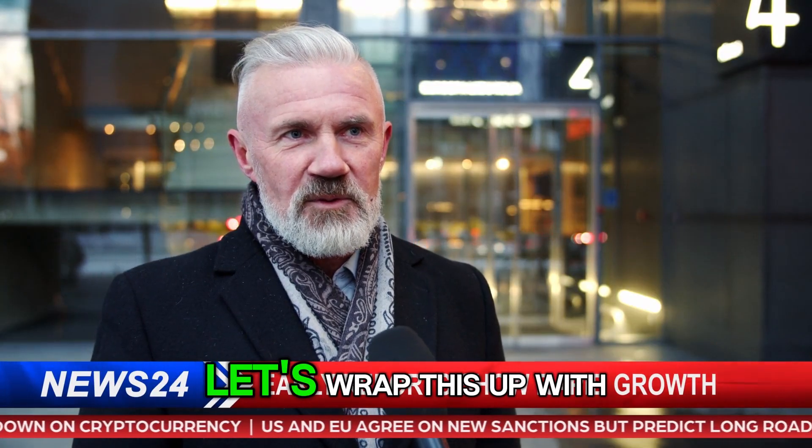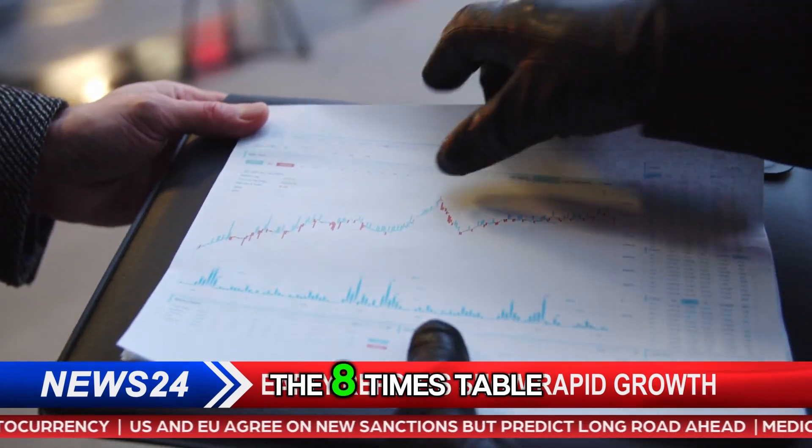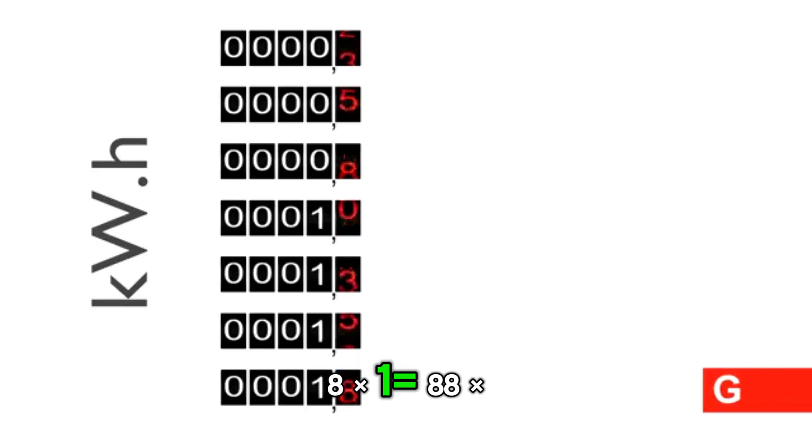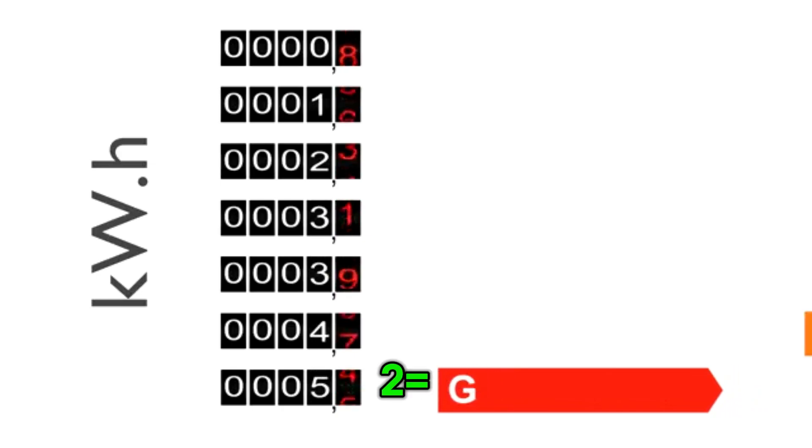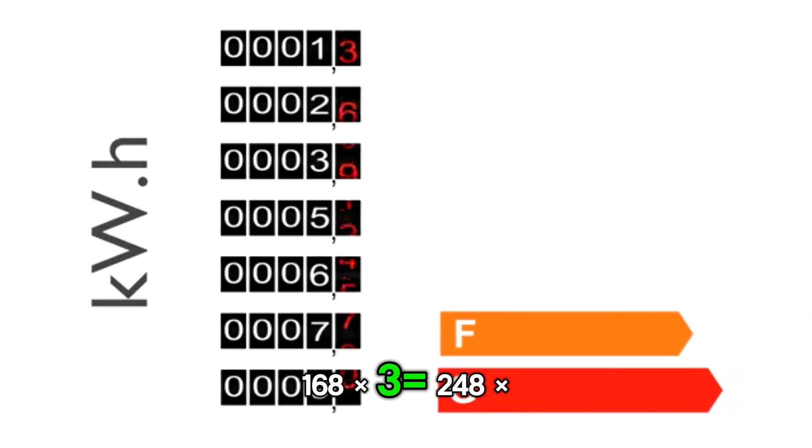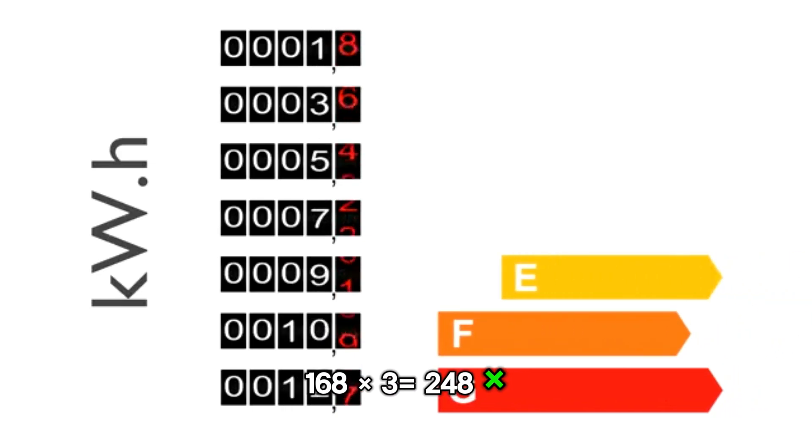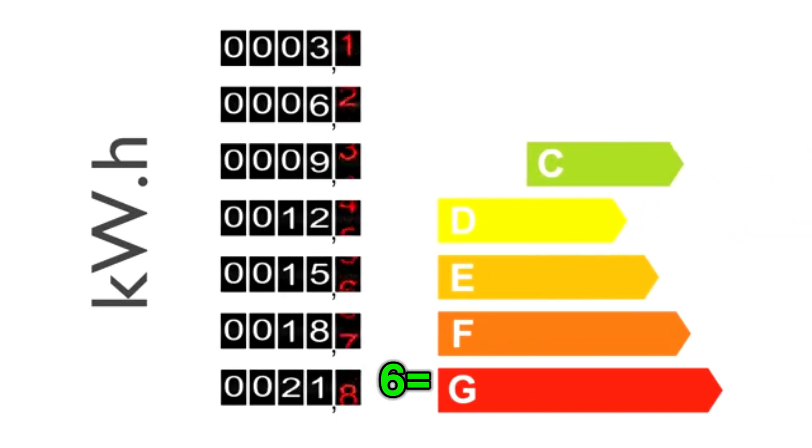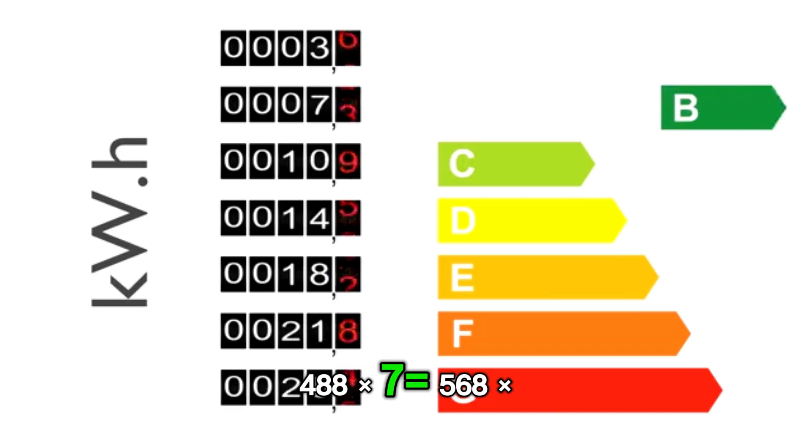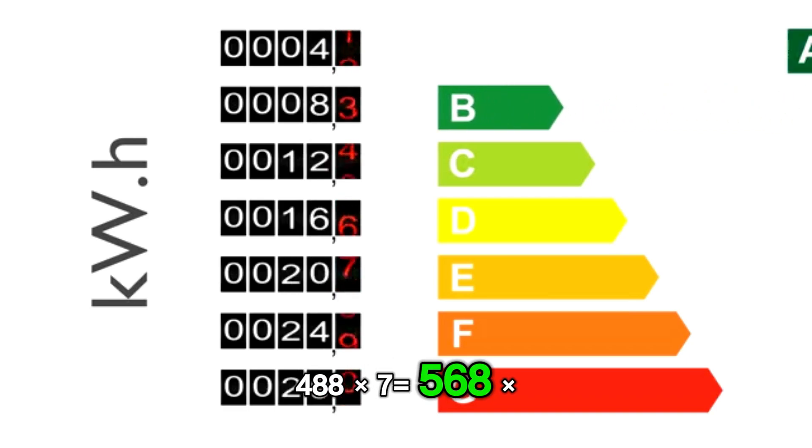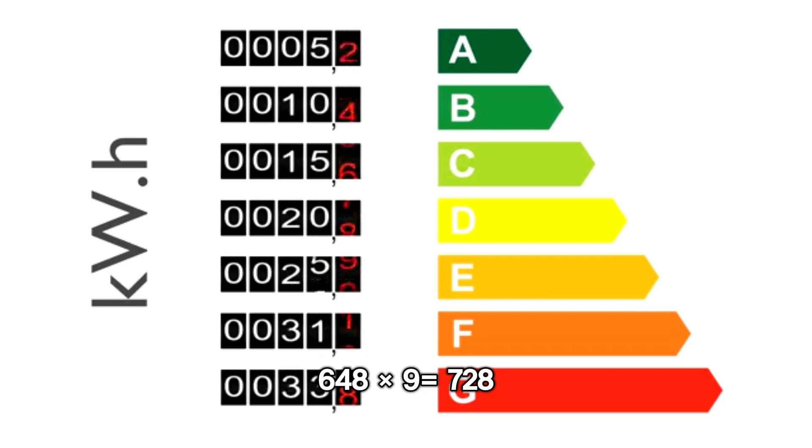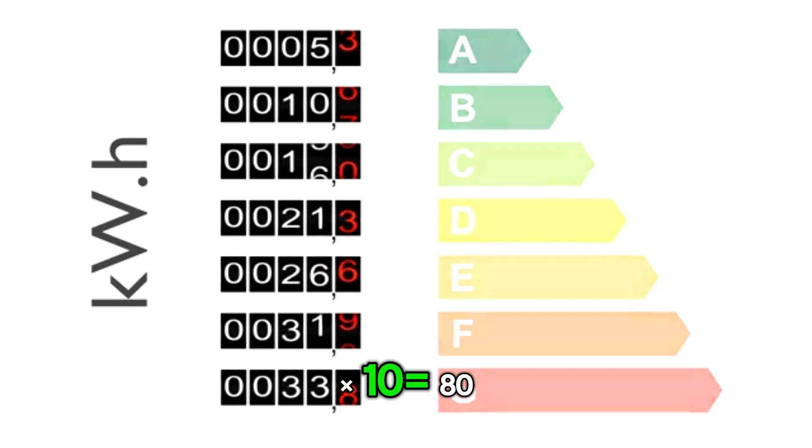All right, superstar. Let's wrap this up with a quick list of the eight times table. Ready? Here we go. Eight times one equals eight, eight times two equals sixteen, eight times three equals twenty-four, eight times four equals thirty-two, eight times five equals forty, eight times six equals forty-eight, eight times seven equals fifty-six, eight times eight equals sixty-four, eight times nine equals seventy-two, eight times ten equals eighty.